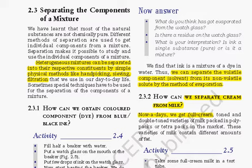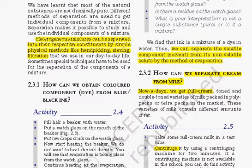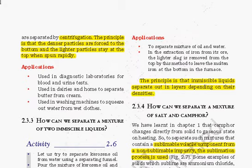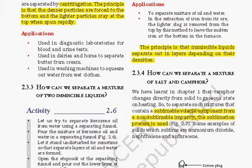To separate cream from milk — nowadays we get skim milk — the method of centrifugation is used with a centrifuge machine. The machine rotates the solution at high speed and it gets separated. The principle is that denser particles are forced to the bottom and lighter particles stay at the top when spun rapidly.